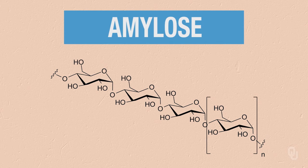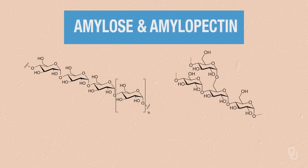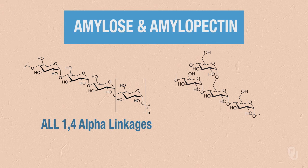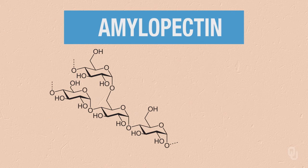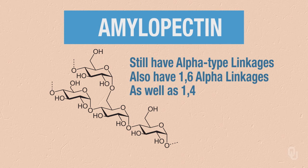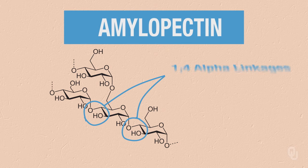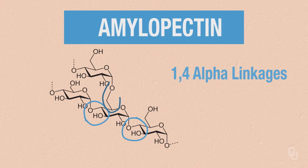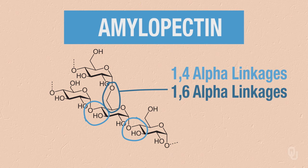When we think about these structures, we also have amylopectin. Amylose, as you can see here, is just a straight chain with all 1,4-alpha linkages. When we look at amylopectin, we still have alpha-type linkages, but we also have 1,6-connections as well as 1,4. You'll see that we have our normal 1,4-alpha linkages, but then we have a 1,6-alpha linkage. That's what makes amylopectin a little bit different, and why we need not only alpha-amylase, the enzyme, but also beta-amylase enzyme to fully break down our carbohydrates.